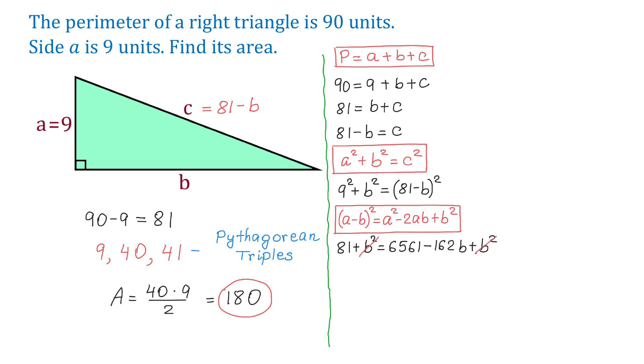Then we will subtract 6561 from both sides, and now on the left side we will have negative 6480, and on the right side, negative 162B. Then we will divide both sides by negative 162, and we will get that B equals 40.